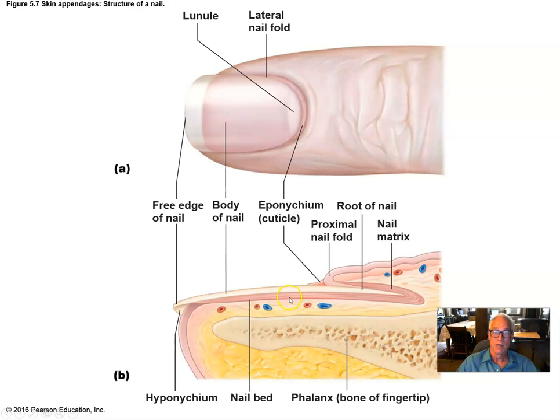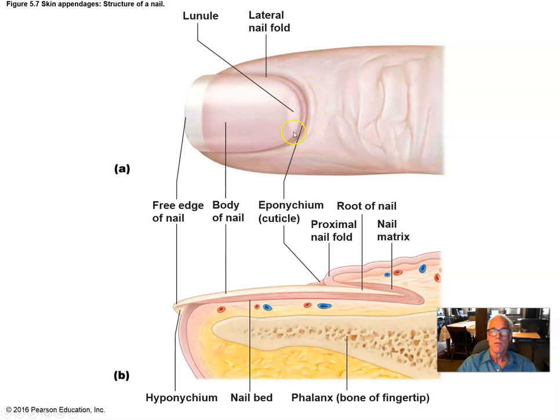We have a nail bed, which is an adaptation of the epidermis — the epithelium that attaches the nail firmly to the distal phalanx as it pushes out distally. The hyponychium is the tissue just proximal to the free end of the nail. The eponychium is a little layer of tissue just distal to the nail matrix.